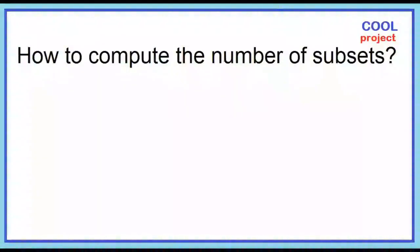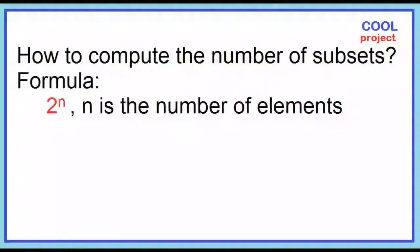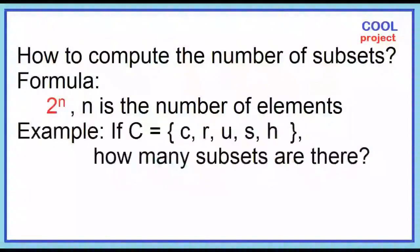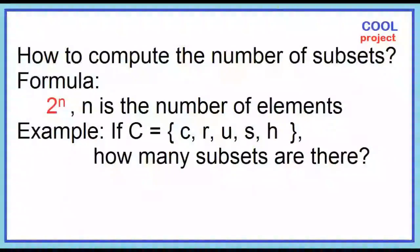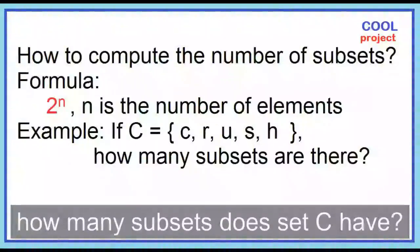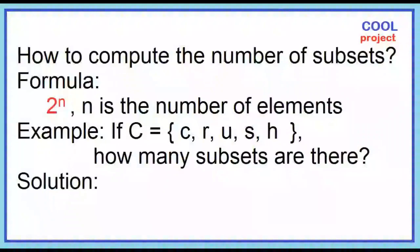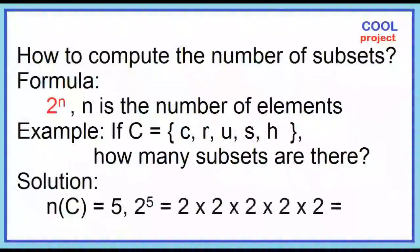How to compute the number of subsets? Here's the formula: 2 to the power of N, where N is the number of elements. Example: If set C contains 5 elements, how many subsets does set C have? The cardinality of set C is 5. Two to the power of 5 equals 2 × 2 × 2 × 2 × 2, which equals 32.